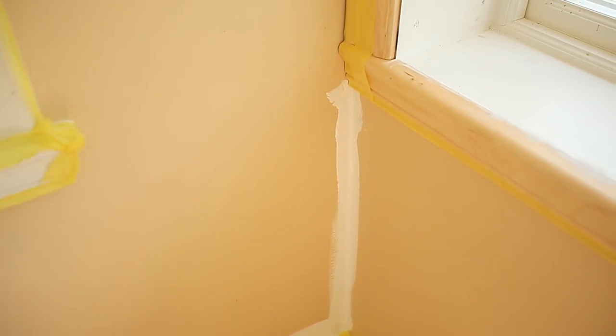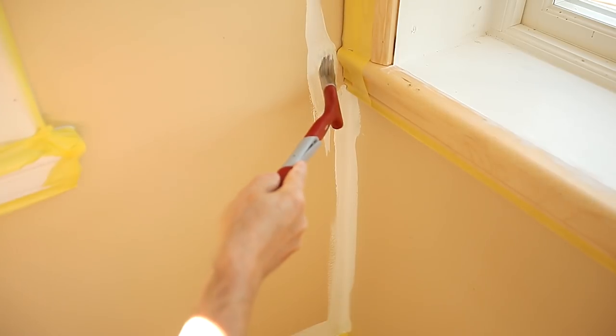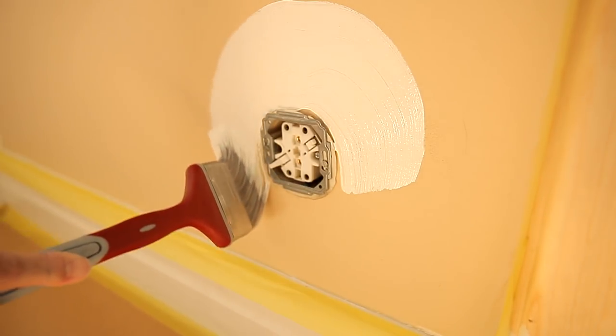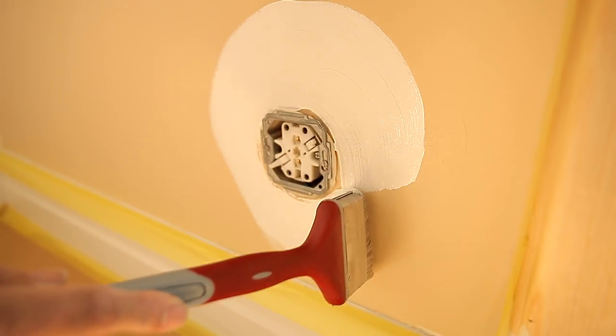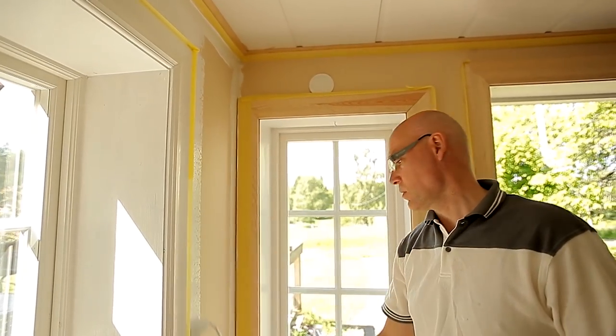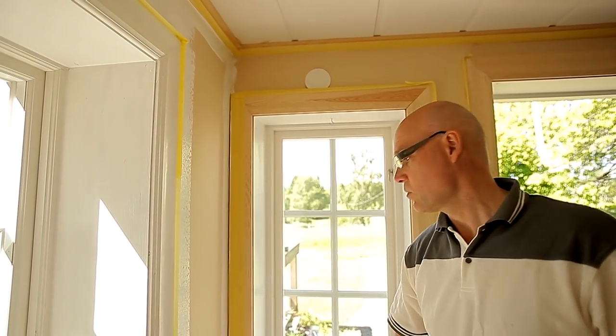Complete one wall at a time so that the paint doesn't have time to dry. Cut in carefully around power outlets and power switches using the brush. Use the small roller to roll over the areas you have painted with the brush.